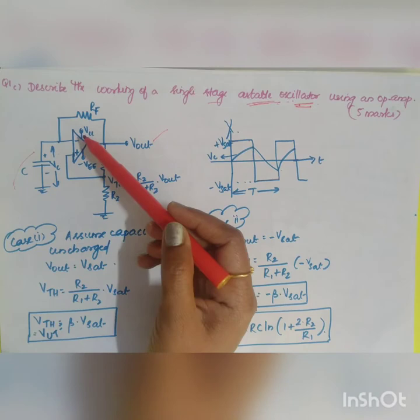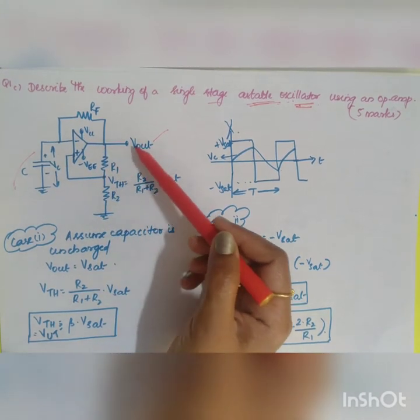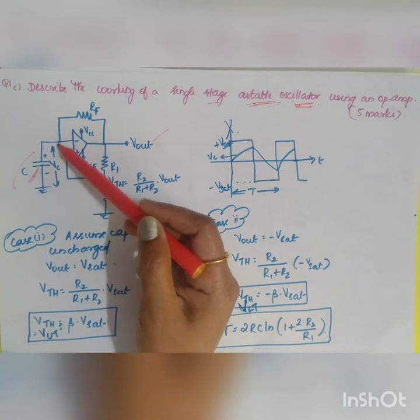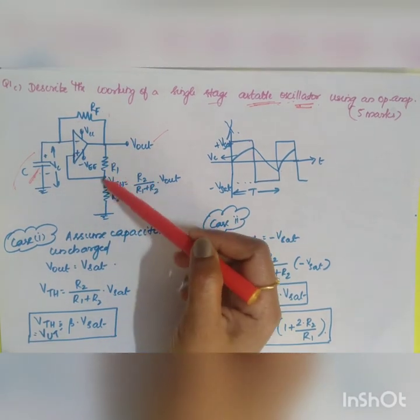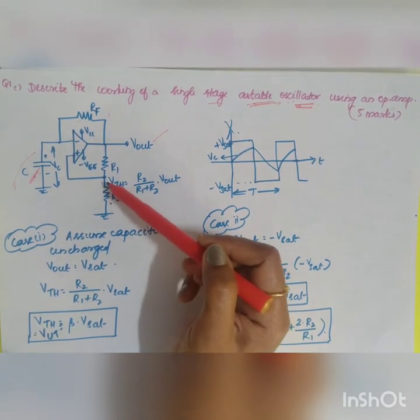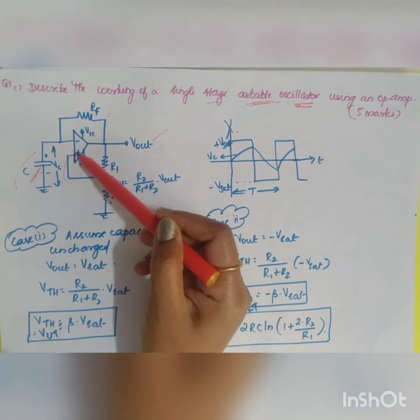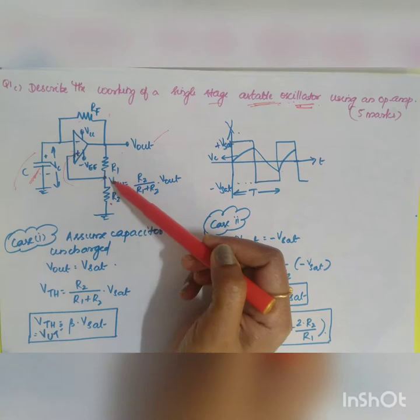There are two cases. Here, your inverting terminal will be connected to your capacitor and you have a feedback resistor. Here there is a potential divider resistor. Always there will be a portion of the output fed back to the input, positive feedback.